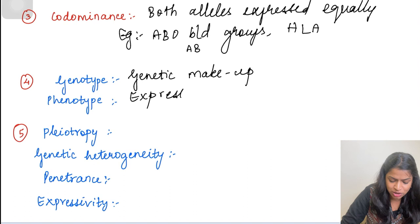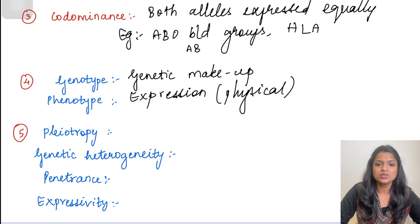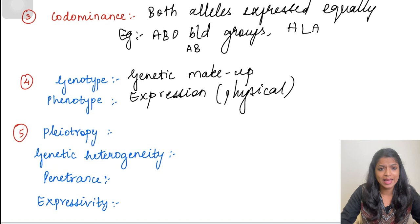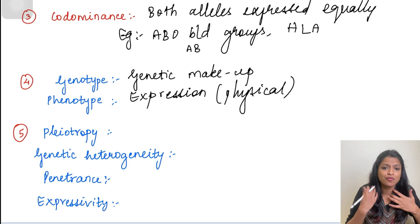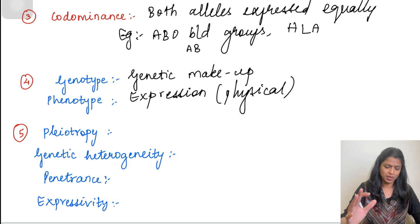For example, Turner syndrome: the genotype is 45 XO, while the phenotype is the physical appearance of the patient. Turner syndrome patients are usually short in stature, they have a webbed neck and low hairline. All of these features are called the phenotypic expression of the patient.